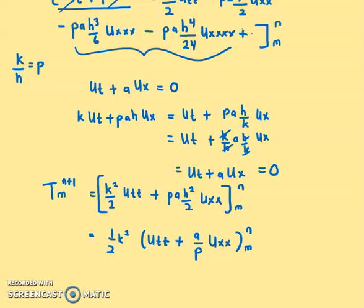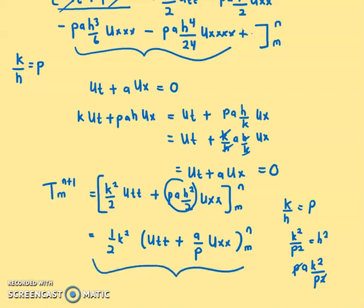That concludes the derivation of the local truncation error for the downwind scheme. The principal part is k²/2 times (Utt plus a/P * Uxx). We hope you can derive the LTE for any other explicit scheme — for example, for the heat equation — on your own. Thank you.